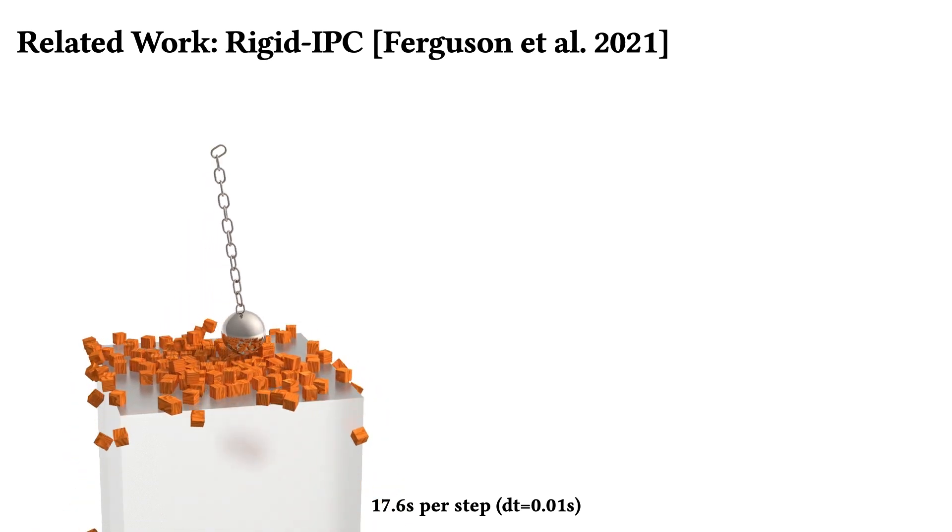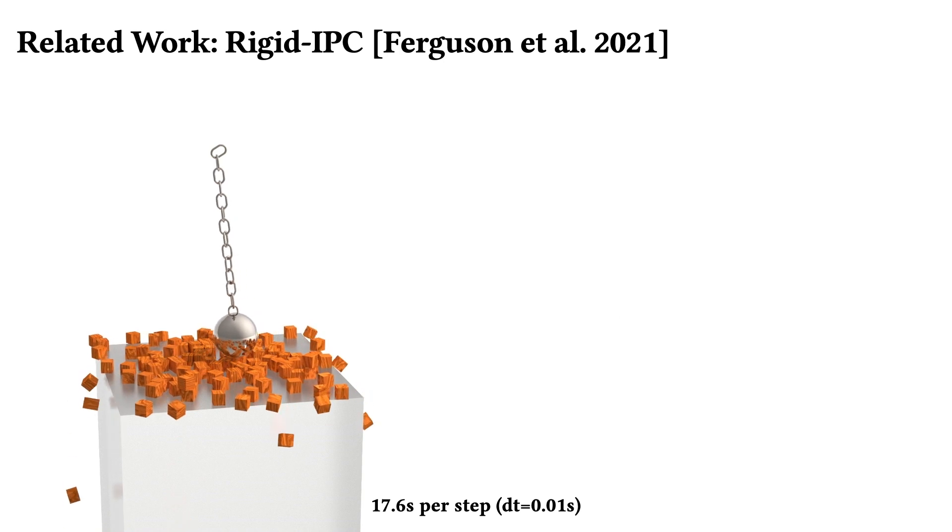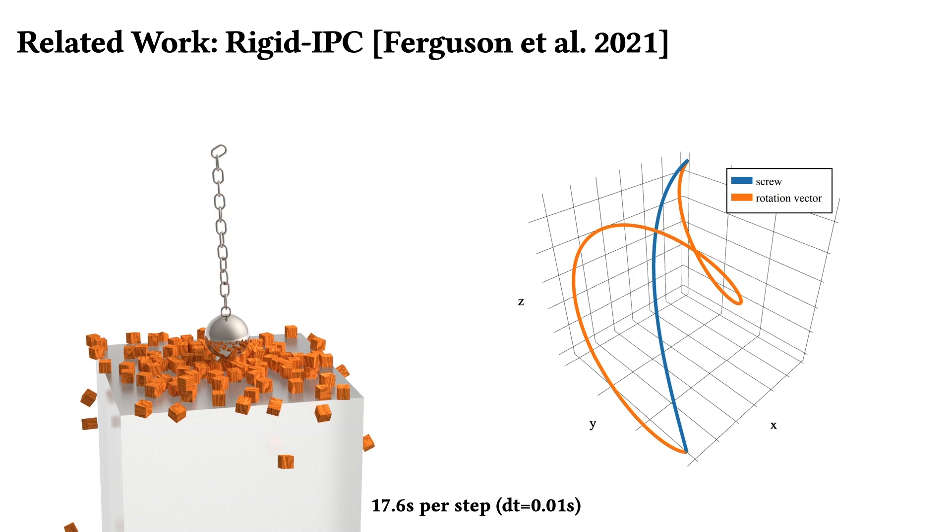However, to achieve these guarantees and strictly keep bodies from interpenetration, rigidIPC requires continuous collision detection on rotational trajectories. Rotational CCD is very expensive, and so makes rigidIPC much slower than currently available fast solvers like Bullet.